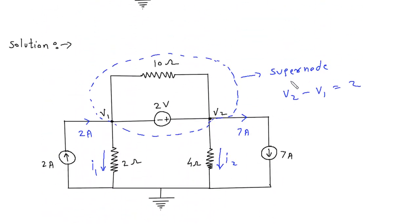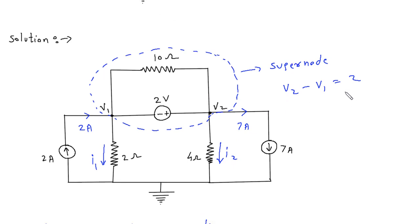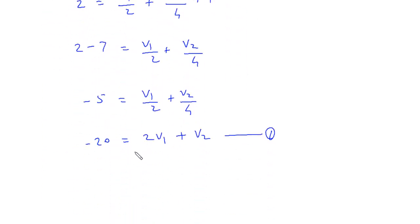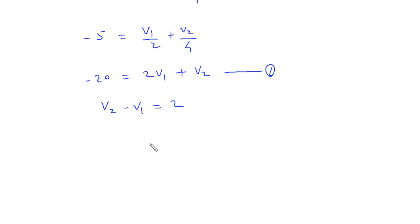From the supernode we have another equation: v2 minus v1 is equal to 2. Let us call this Equation 2.